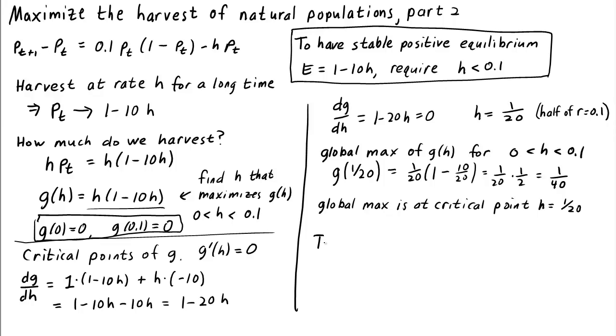To maximize harvest, we need to set H, the harvesting effort, to 1/20, which is half the low density growth rate R. In this case, the harvest is G of 1/20, which is 1/40.